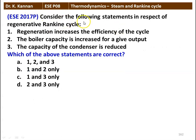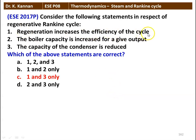Next question: consider the following statements in respect of the regenerative Rankine cycle. 1. Regeneration increases the efficiency of the cycle. 2. The boiler capacity is increased for the given output. 3. The capacity of the condenser is reduced. The correct answer is 1 and 3. Regeneration increases the efficiency of the cycle and the capacity of the condenser is reduced when you have regeneration, because we take steam in between the turbine stages, so the load on the condenser is reduced.